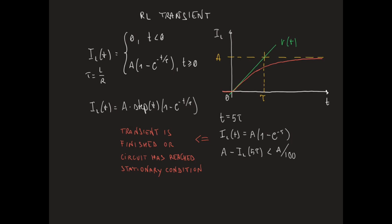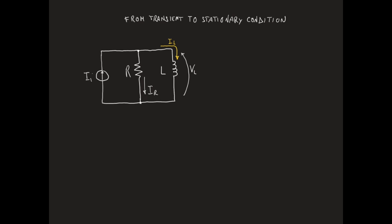The stationary condition is the condition in which voltages and currents in the circuit are no longer changing. We have found that after the arrival of the step signal, IL in the circuit is given by A times (1 minus e^(-t/τ)), where τ is equal to L over R. What about VL, the voltage across the inductor, and IR, the current flowing through the resistor?